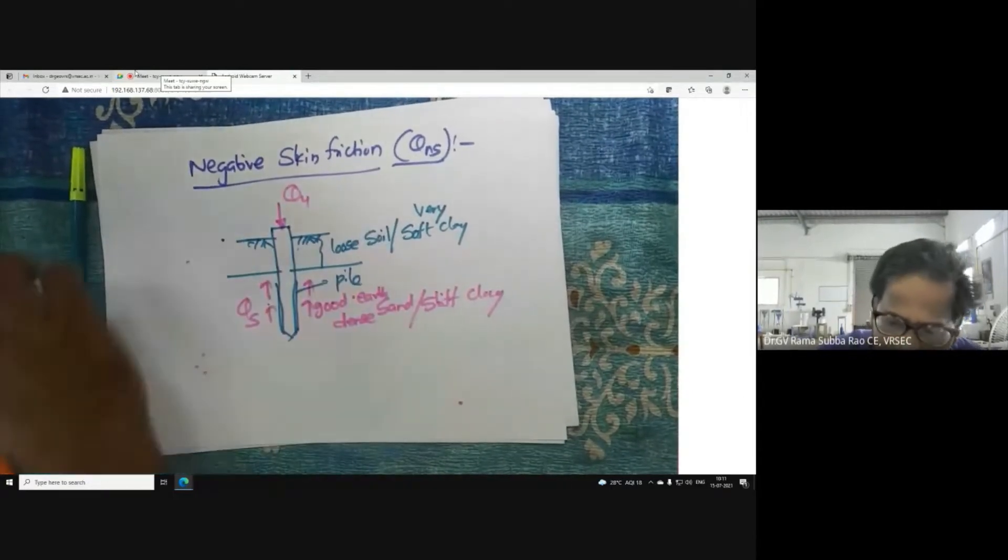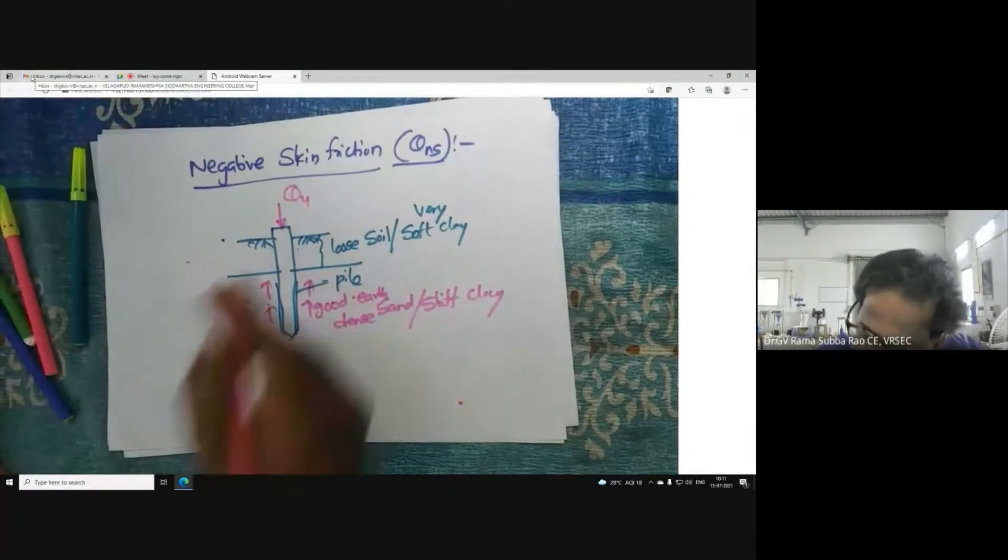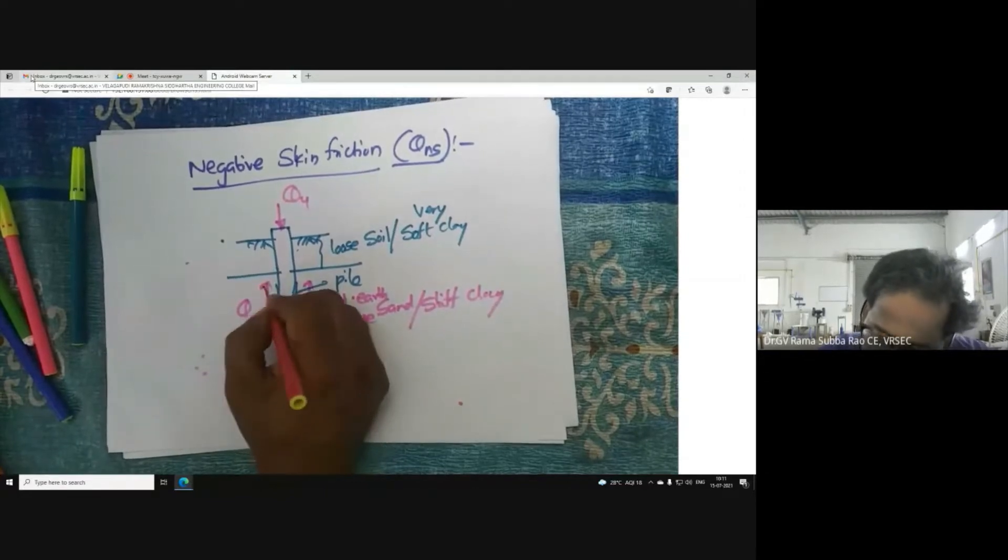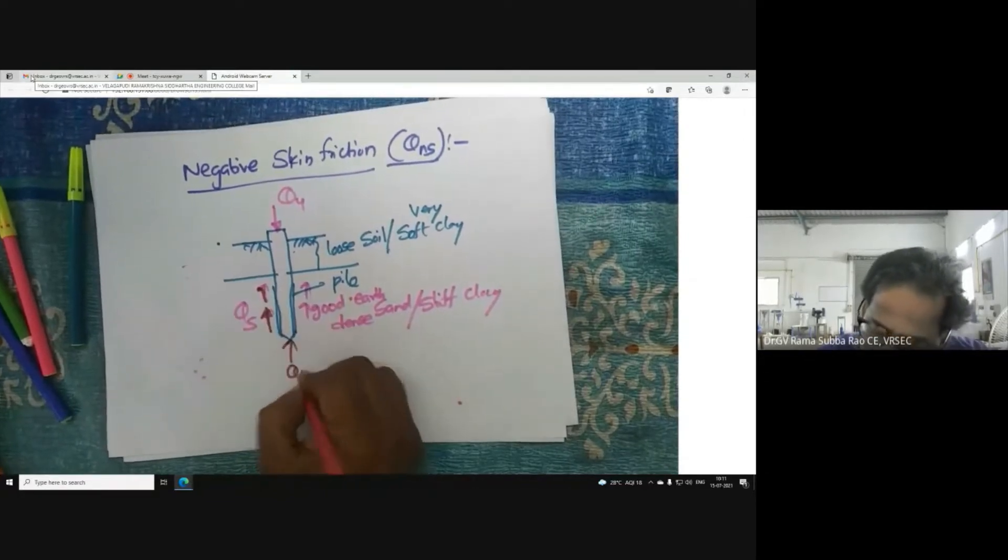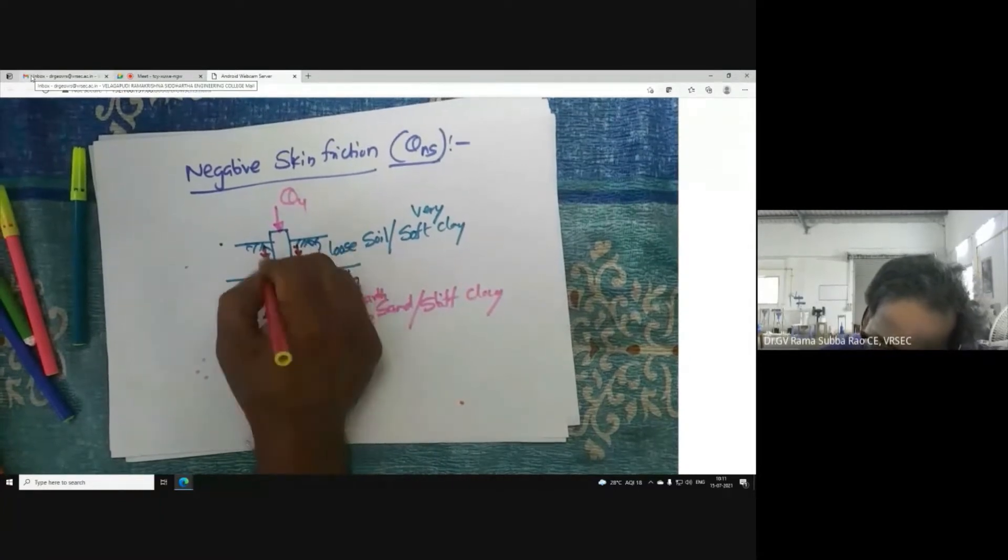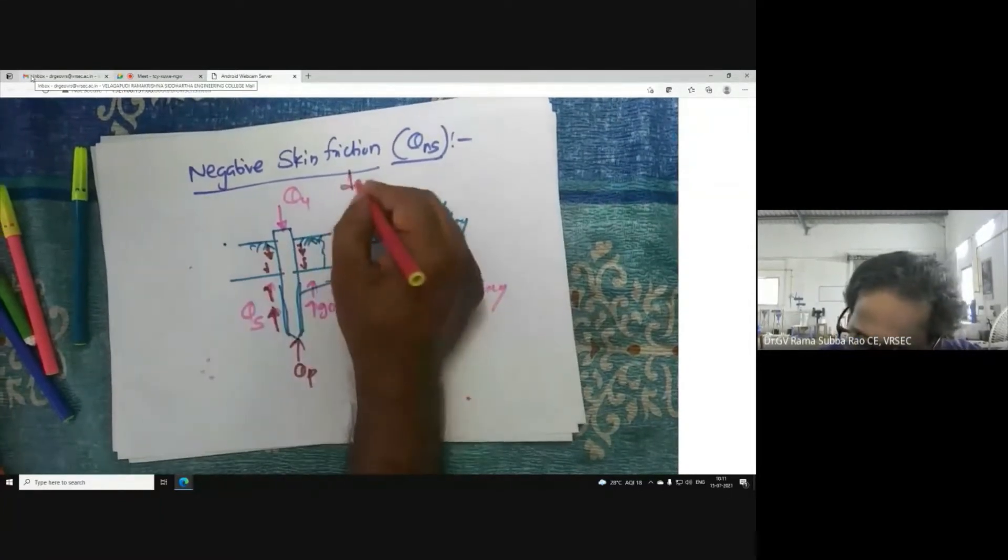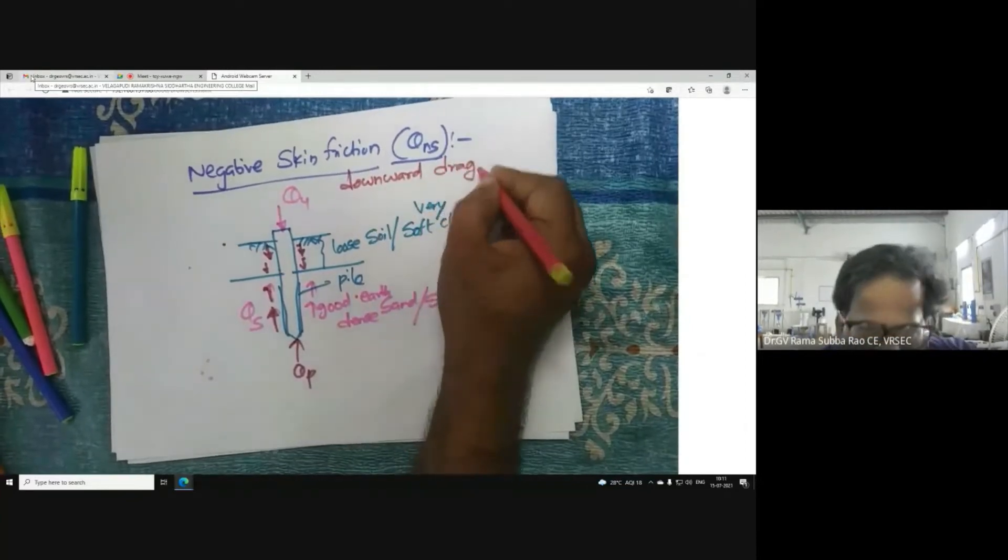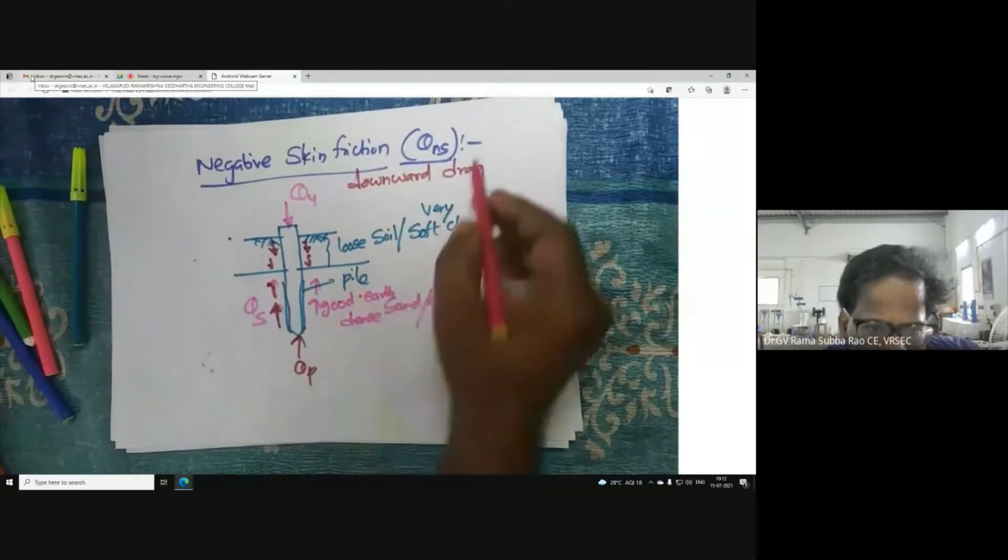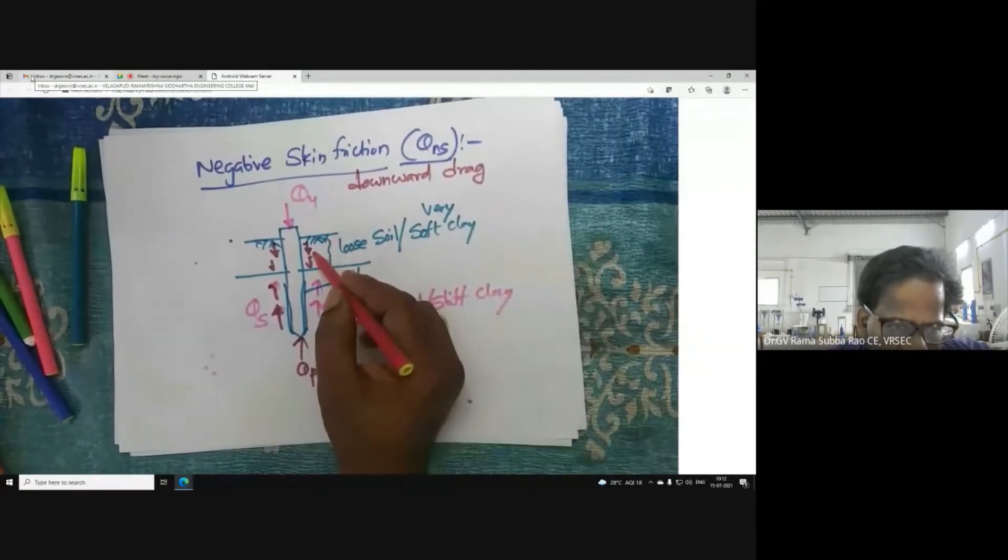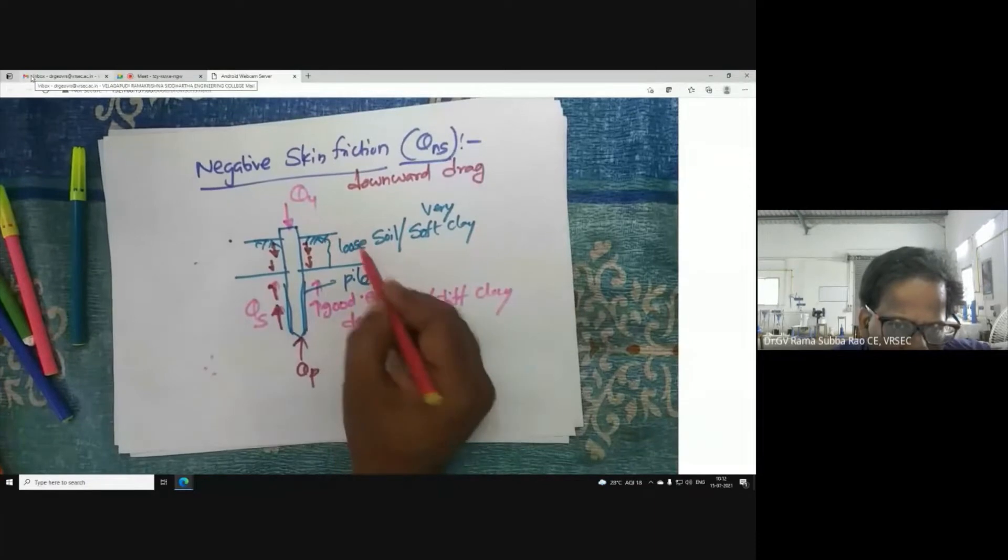But this time, let me draw with another color. This is QP, in the downward direction. That's why people call this downward drag - the force that occurs when the pile is embedded in loose soil.